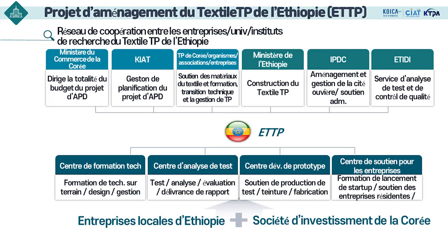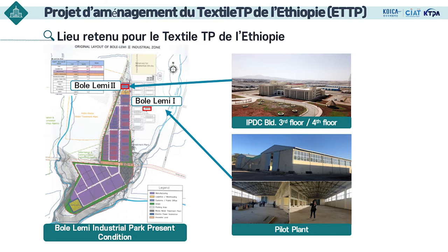Le projet est géré par le ministère de l'Industrie de l'Éthiopie et l'Industrial Complex Management Corporation, et l'ETI (Textile Development Institute) sont les agences d'exécution de ce projet. Devant l'entrée du site industriel de Bolelemi se trouve le bâtiment administratif de l'Ethiopian Industrial Complex Management Corporation, et les troisième et quatrième étages sont maintenant utilisés pour le Textile Technopark. Dans le bâtiment principal se trouve le bureau administratif, le bureau de soutien aux entreprises ainsi qu'une salle de formation, un centre d'incubation d'entreprises et un centre de soutien aux entreprises.